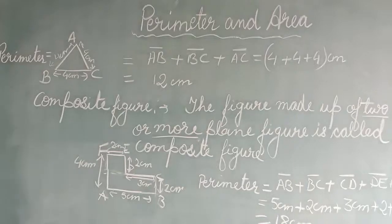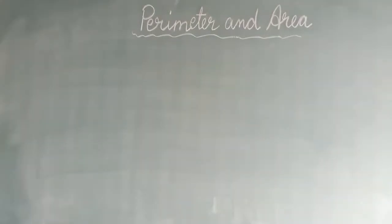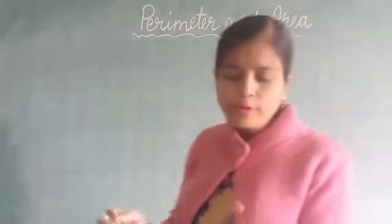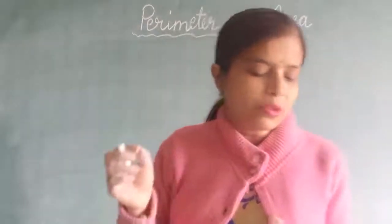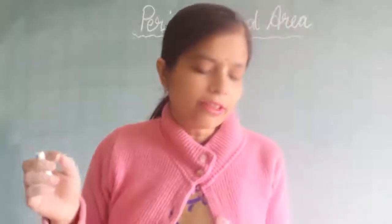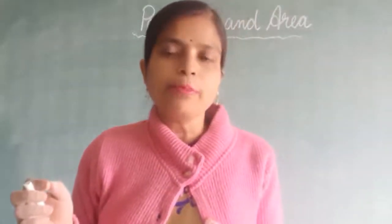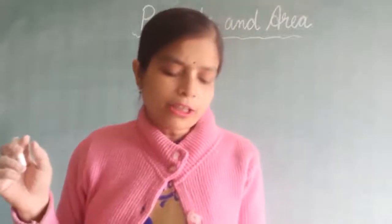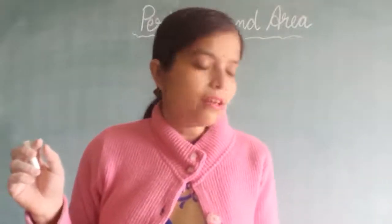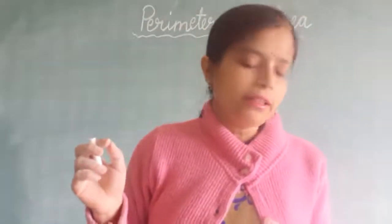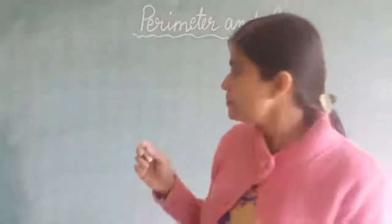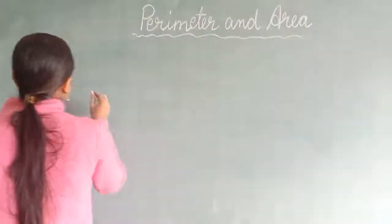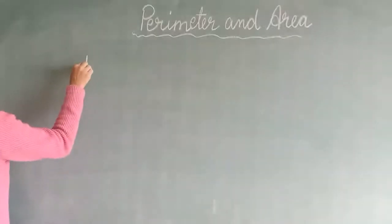Now let's take one example based on what we have learnt. Here is a question: Every morning Rani goes for a walk around a rectangular path which is 120 metres in length and 100 metres in breadth. Let's draw the rectangular path.